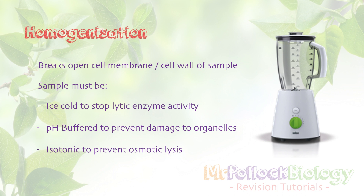Finally, the sample has to be isotonic — the solution that we're spinning these things in has to be at the same water potential as the tissues or cells themselves. The reason for this is because you don't want water to move into the cells by osmosis and burst them — this is osmotic lysis. Equally, you don't want water to move out of the cells by osmosis and compromise the integrity of the organelles. So this is all about keeping our organelles as protected as they can be, seeing as we're sticking them through a blender.